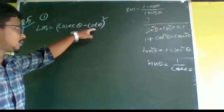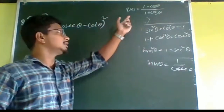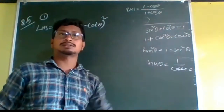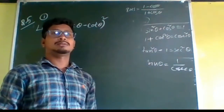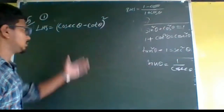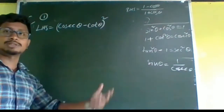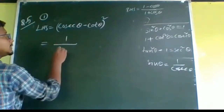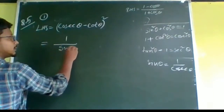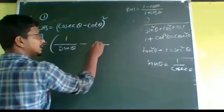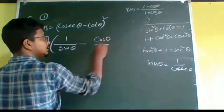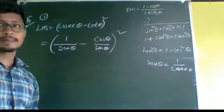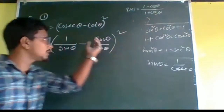We have (cosec θ - cot θ)² and the right-hand side is (1 - cosθ) / (1 + cosθ). They are asking us to find the simplest form, so we have to convert the left-hand side. cosec θ means 1/sinθ and cot θ means cosθ/sinθ, and the whole expression is squared.